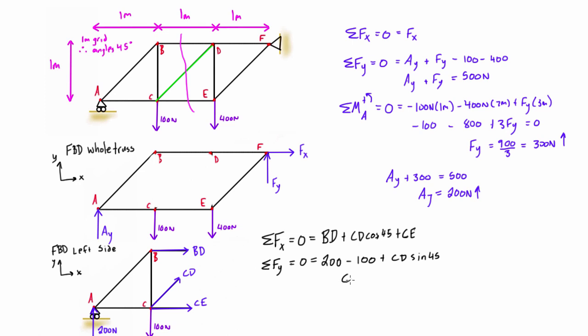Rearranging this, we get CD equals negative 100 over sin 45, which works out to negative 144.4 newtons. This negative sign means the member is in compression, so make sure you write C in brackets to clearly identify members in compression.